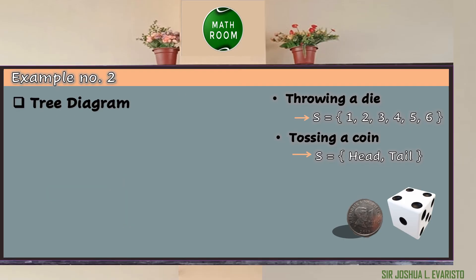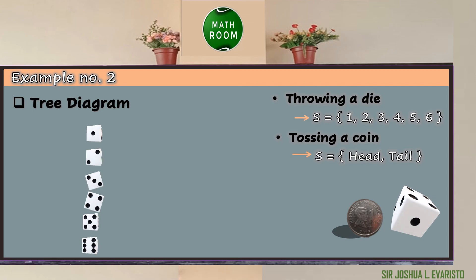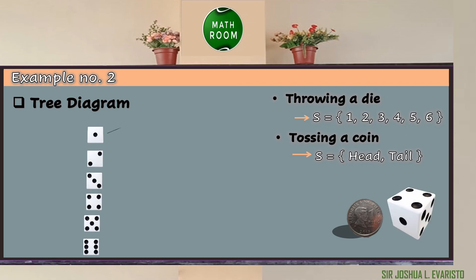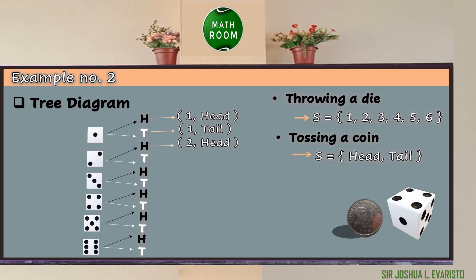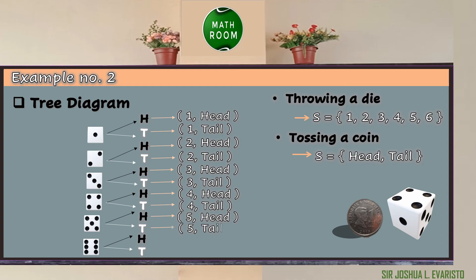To illustrate all the possible outcomes using a tree diagram, first we list all the possible outcomes of the first event, which is the die. Each possible outcome of the die is paired with each possible outcome of the second event, which is the coin — head and tail. By looking at the diagram, the set of possible outcomes of the two events are: 1 head, 1 tail, 2 head, 2 tail, 3 head, 3 tail, 4 head, 4 tail, 5 head, 5 tail, 6 head, and 6 tail.